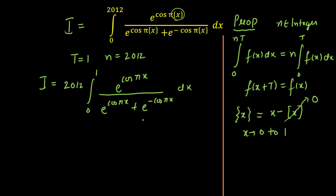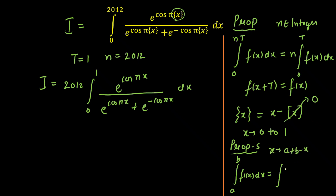Now I am going to apply King's property here, since after applying King's the denominator will not change — that is one sign that you should use King's property here. King's property is property 5. When you have integration from a to b of f(x) dx, King's says that if you replace x by the upper limit plus lower limit minus x, the value of the integration will not change. Inside you will get f(a + b − x) dx, keeping the limits a to b intact.